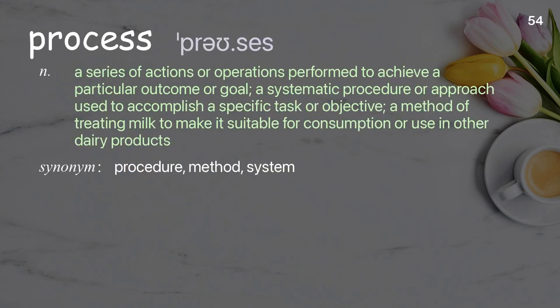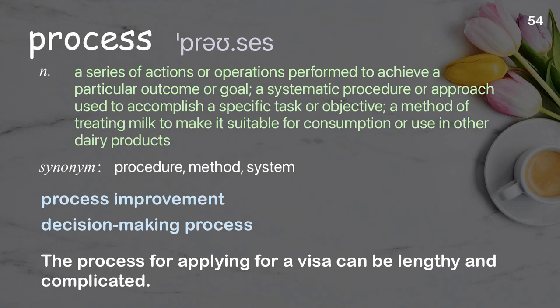Process: a series of actions or operations performed to achieve a particular outcome or goal; a systematic procedure or approach used to accomplish a specific task or objective. Examples: process improvement; decision-making process; the process for applying for a visa can be lengthy and complicated.